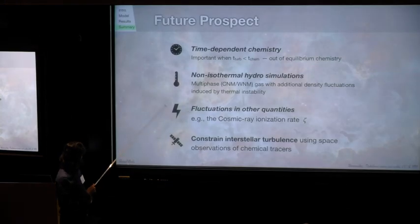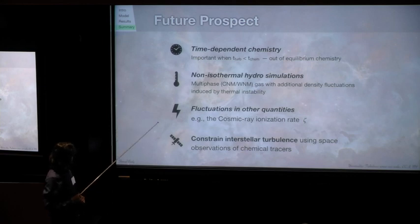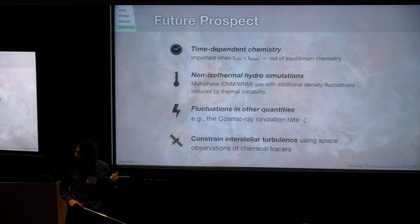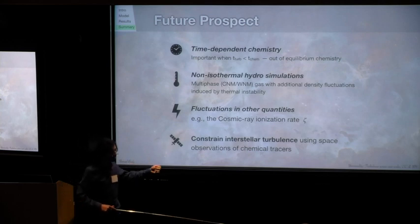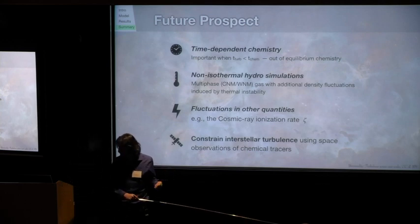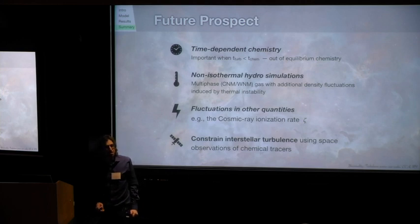Once we do all this, once this all is checked, we can go to the last step and use this method of chemical abundances to constrain turbulence properties and the driving of turbulence in the interstellar medium. Thank you.